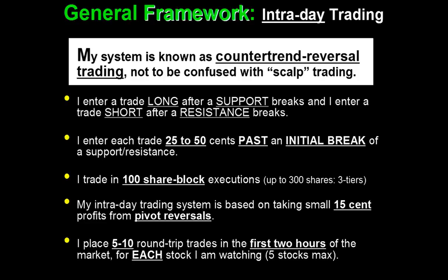For intraday, you typically go 25 to 50 cents — dependent on several factors — and it's always 100-share blocks to start. I cap positions at three levels, so three times 100 is 300 shares. When training, you start with 100 shares consistently for every level. If you accumulate up to three levels, you'll have a 300-share position. The biggest talking point everyone wants to discuss is profit — which on intraday is 15 cents. With a per-share cost structure like Lightspeed's, you'll net around $13 per trade, and that adds up over 10 to 20 round-trip trades.